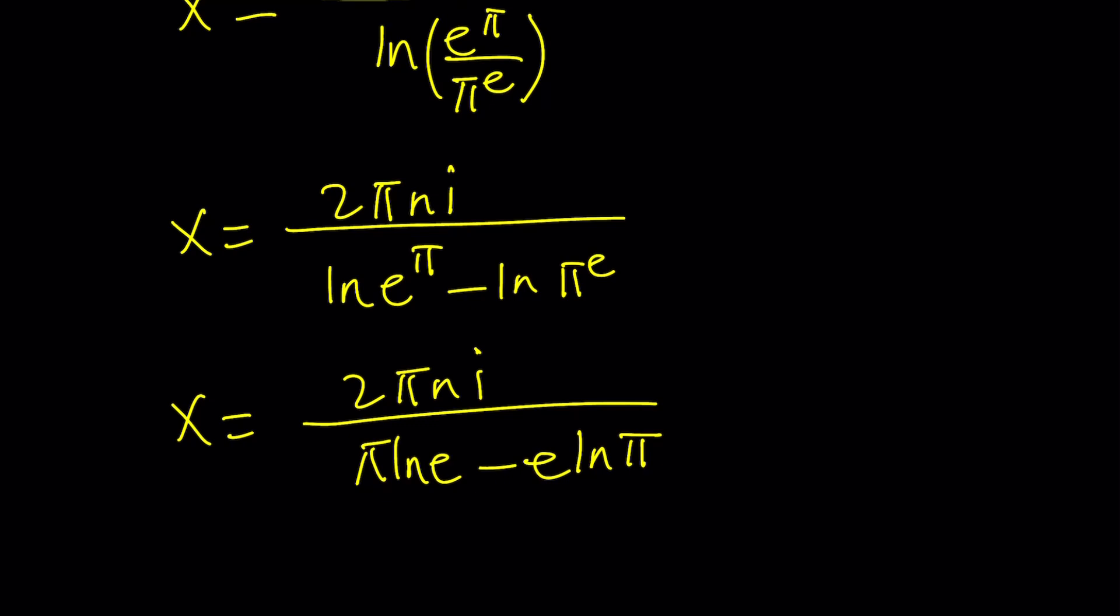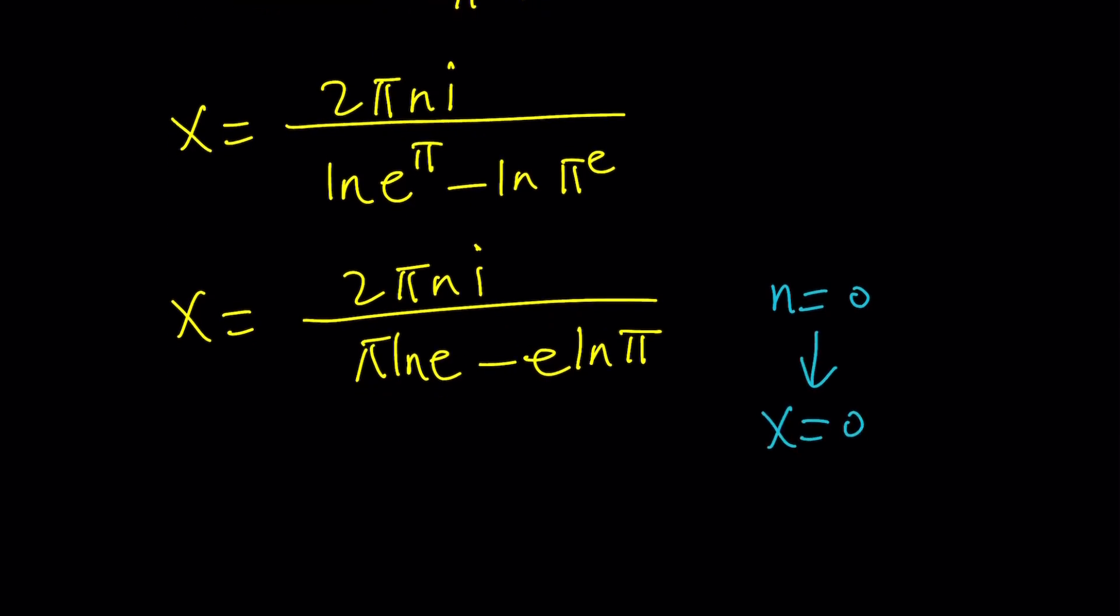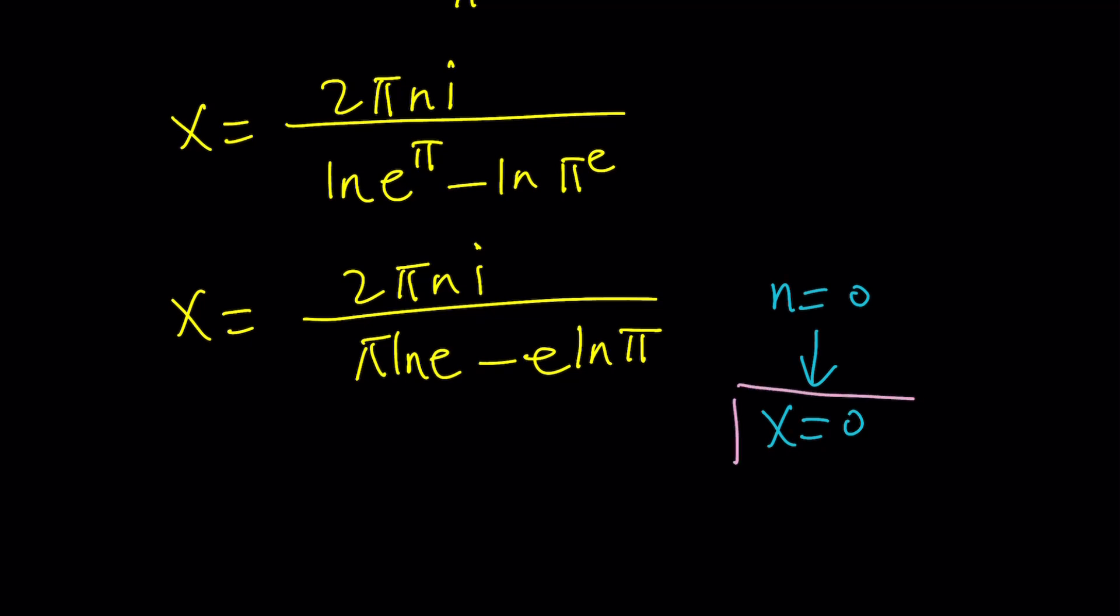n equals 0 should also work, right? And guess what? n equals 0 gives us x equals 0. And as you know, x equals 0 is already a solution of this equation. It's just a particular solution. It's the principal branch. But if you're looking for general solutions, you can replace n with any integer you want, and you'll get infinitely many solutions.